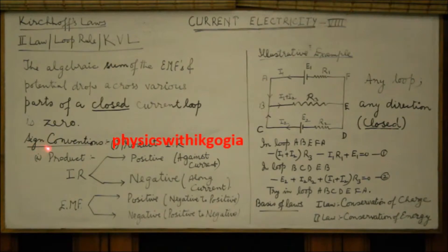There are a few sign conventions which we use. The product IR is taken as positive if we are moving in a loop against the direction of current. And we take the product I into R, that is potential difference, as negative while we move along the direction of current.